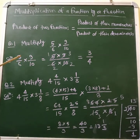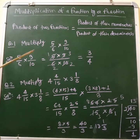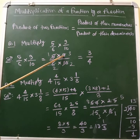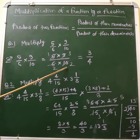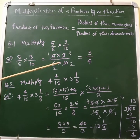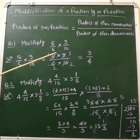5/6 multiplied by 9/10 is equal to — we have to multiply the numerators of both fractions. So, 5 multiplied by 9, divided by the product of their denominators, so 6 multiplied by 10. Now we check the divisibility of the numbers.